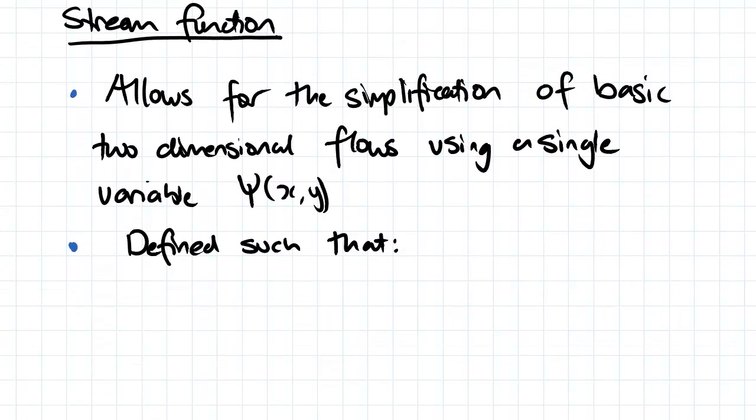So the stream function essentially allows the simplification of basic two-dimensional flows by using a single variable, and that single variable is a function of both x and y. We're only dealing with two-dimensional flows here, not three-dimensional flows, so there's no z component.